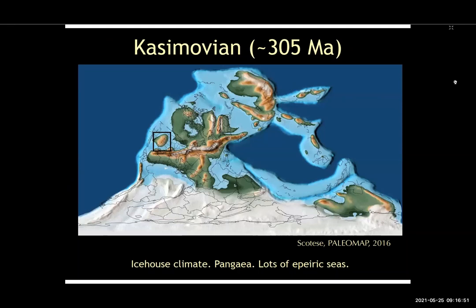I'm going to focus on western equatorial Pangea, which for me is the western US — the boxed area from Scotese's PaleoMap Project. The blob in that box is essentially what we refer to as the Ancestral Rocky Mountains. Since this is a conference on the Casimovian, I'm showing the Casimovian time slice. Whether there were mini ice sheets or a single ice sheet, there was a lot of ice in the southern polar region — an ice house climate. The continents had come together to form the supercontinent Pangea, giving us that massive central Pangean mountain orogenic belt, and a fair number of epeiric seas.